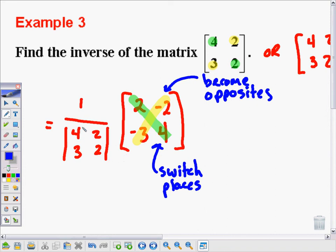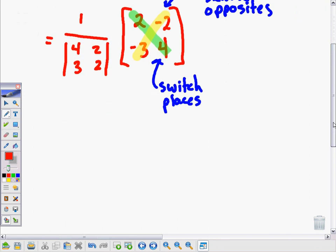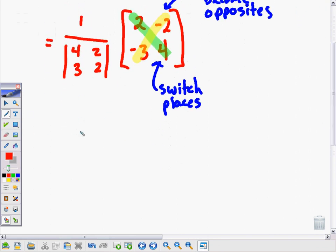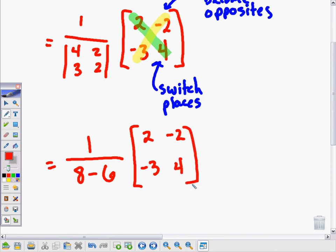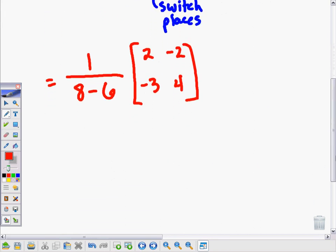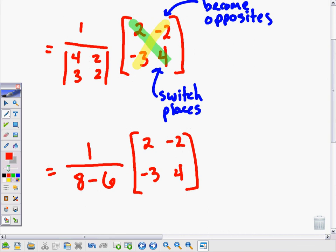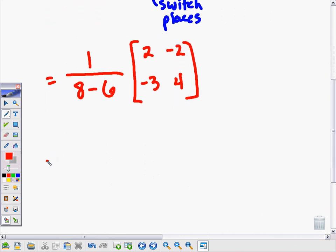Let's continue here. We have to find this determinant first. The determinant will be found by going 4 times 2, which is 8, minus 3 times 2, which is 6, and I've got my switcheroo here: 2, negative 2, negative 3, 4. That leads me to 1 over 2 times the switcheroo.